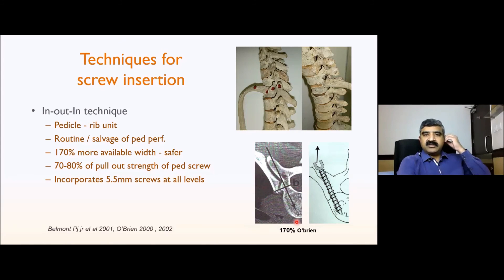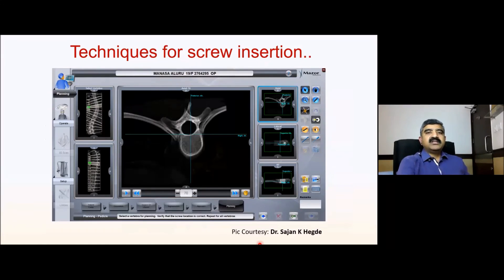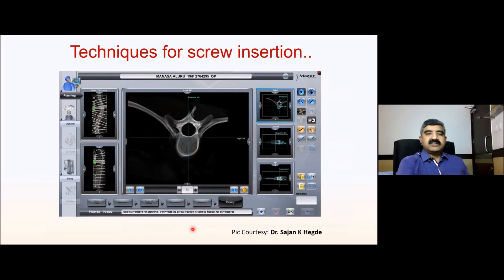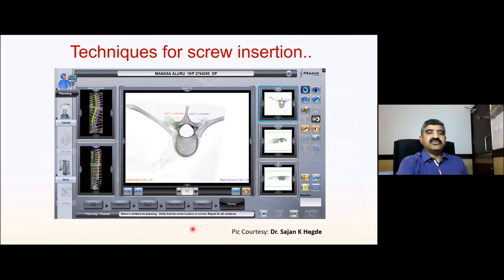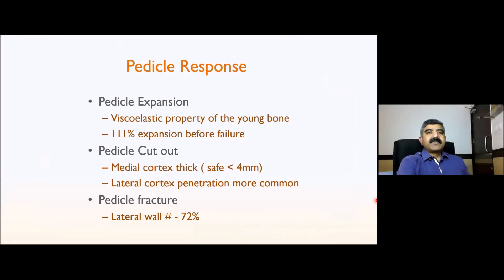Newer techniques include 2D or 3D navigation where you can live-navigate the screw and screw length, and robotic guidance — only three or four centers in India have this. This is an example of planning for a thoracic screw using a robot, showing how they plan the screw between the rib and the pedicle on both sides. Most of the time there is a viscoelastic property of bone in the deformed spine allowing expansion of the pedicle.